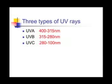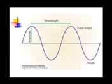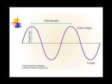The distance between two high points in a wave is known as the wavelength. Ultraviolet radiation consists of light particles that travel in a wave-like fashion.